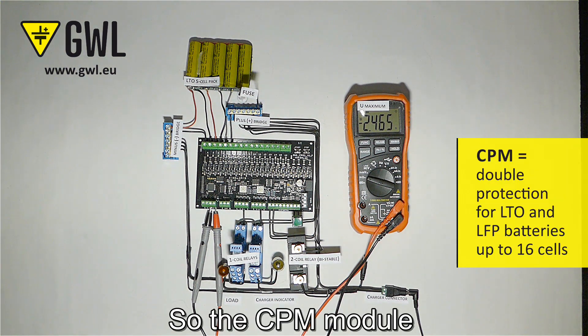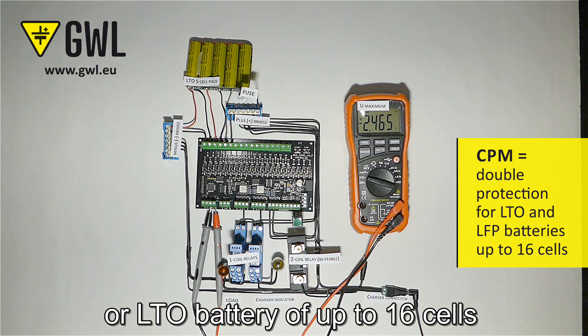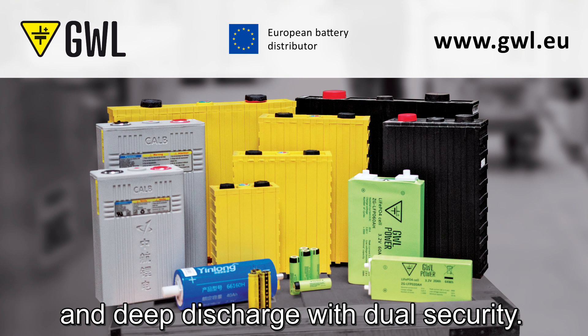So the CPM module protects any lithium phosphate or LTO battery of up to 16 cells against overcharging and deep discharge with dual security.